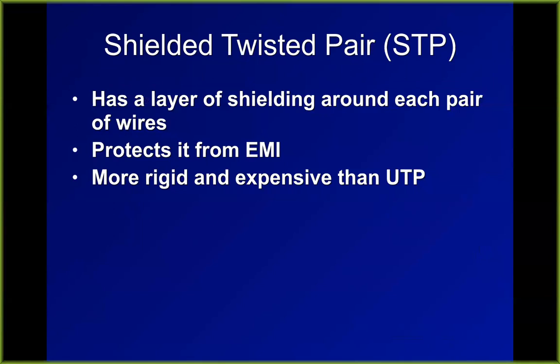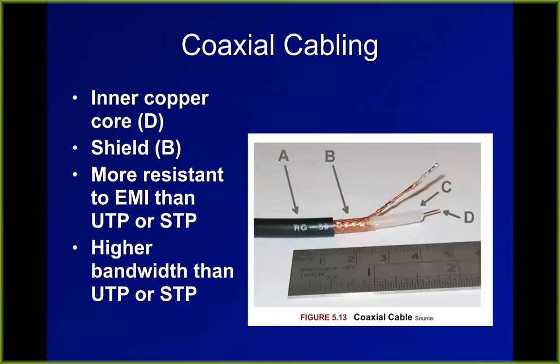Shielded twisted pair is what you get if you're worried about radio signals coming in from the outside, such as a factory with electric motors or fluorescent lights emitting a lot of radio noise. It puts a tinfoil sheath around the cable to protect it from external electromagnetic interference. If you really want interference-free cable, you get coaxial — not Ethernet. Coaxial has one conductor down the middle and a braided sheath around the outside, carefully adjusted to form a waveguide that causes certain frequencies to travel down it very efficiently. This is why it's used for cable TV and cable modems.